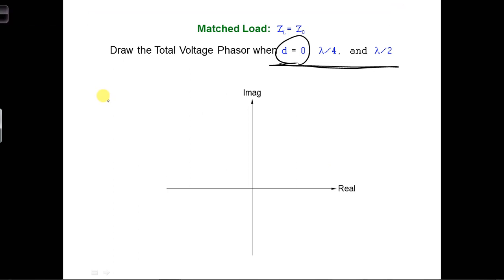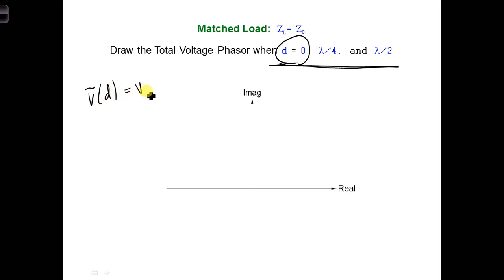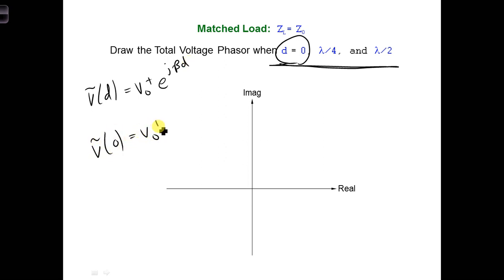We know that the voltage phasor anywhere along the line is V naught plus, E to the J beta D. So when D is equal to zero — when we're at the load — the total voltage phasor is just V naught plus.